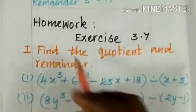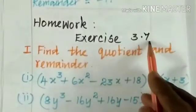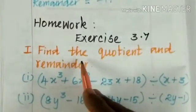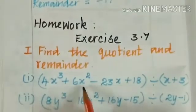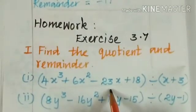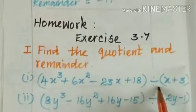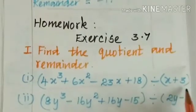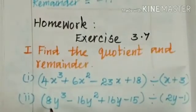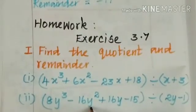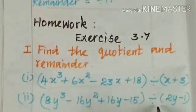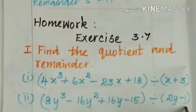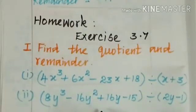Now we move on to today's homework: Exercise 3.7, first section. Find the quotient and remainder for the following: Question 1 — (4x³ + 6x² − 23x + 18) ÷ (x + 3). Question 2 — (8y³ − 16y² + 16y − 15) ÷ (2y − 1). Do the sums in your classwork note properly. Thank you.